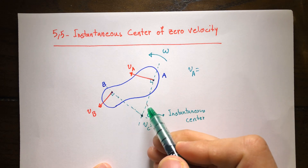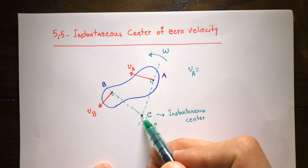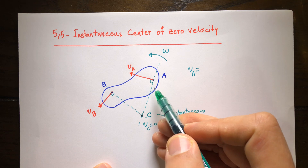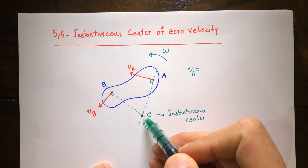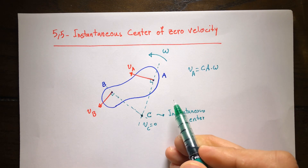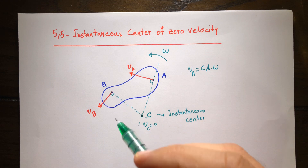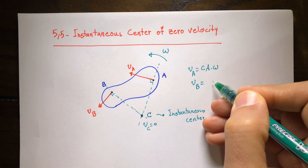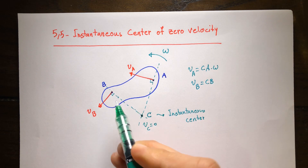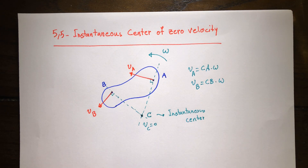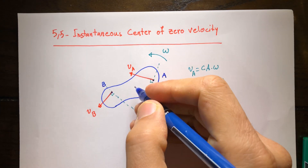If the angular velocity of the rigid body is ω, then imagine the rigid body is pinned to the ground at point C. Using the equation for that case, the velocity of A is going to be r times ω, where r is the distance CA. Similarly, the velocity of B is going to be CB — the distance from that point to the center of rotation — times ω. You can write this for any other point on the rigid body, for example point D.